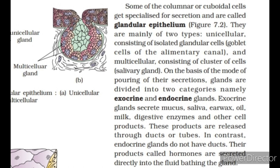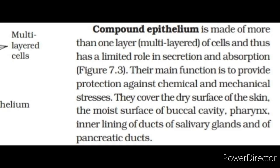Exocrine glands secrete mucus, saliva, earwax, oil, milk, digestive enzymes and other cell products, which are released through ducts or tubes. In contrast, endocrine glands do not have ducts; their products called hormones are secreted directly into the fluid bathing the gland. Compound epithelium is made of more than one layer of cells and has a limited role in secretion and absorption. Their main function is to provide protection against chemical and mechanical stresses. They cover the dry surface of the skin, moist surface of buccal cavity, pharynx, inner lining of ducts of salivary glands and pancreatic ducts.